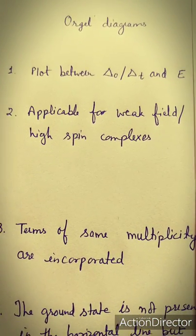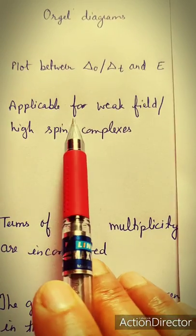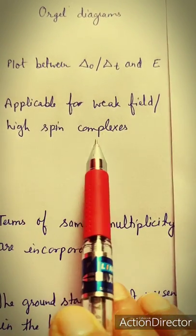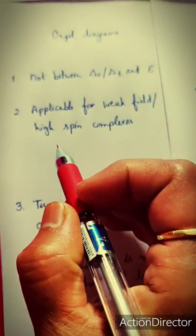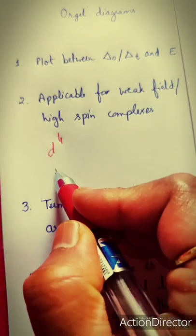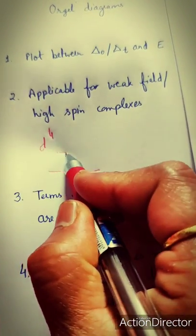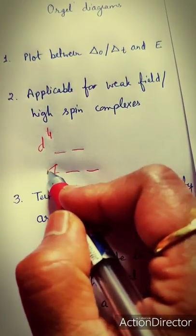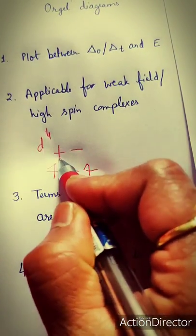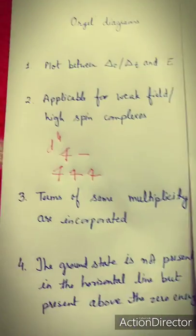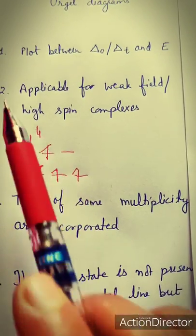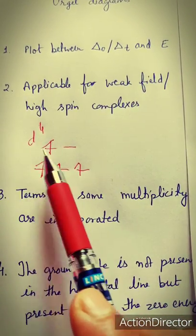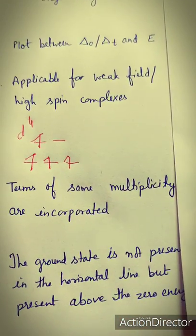Orgel diagrams are applicable for weak field or high spin complexes only. For example, in the case of a D4 configuration, the electronic arrangement shows four unpaired electrons, making it a high spin complex. Orgel diagrams are applicable for such complexes and are not applicable for low spin or strong field complexes.